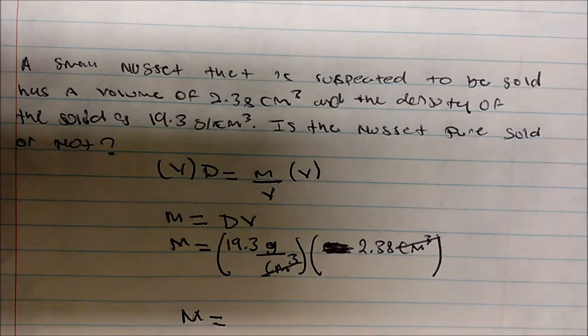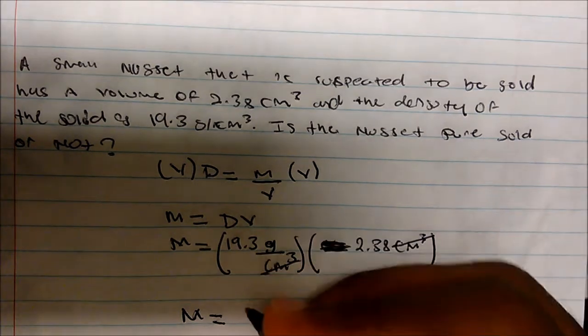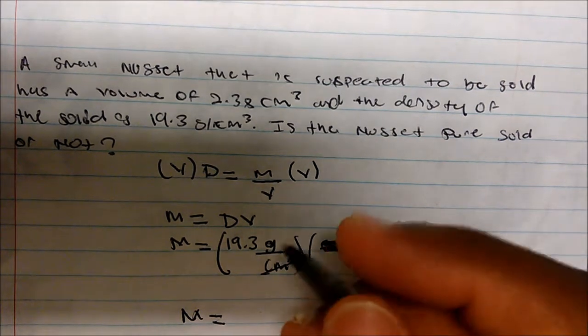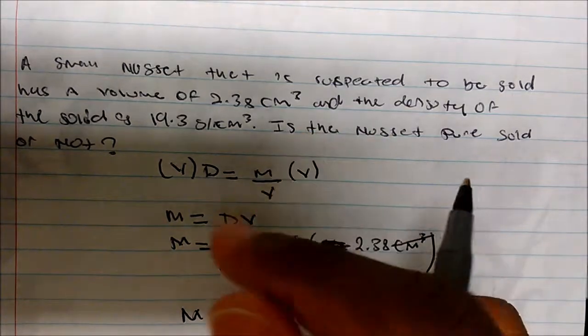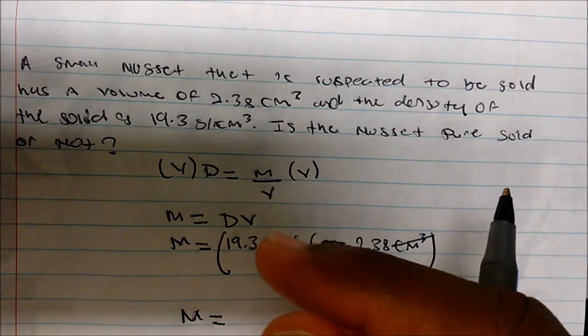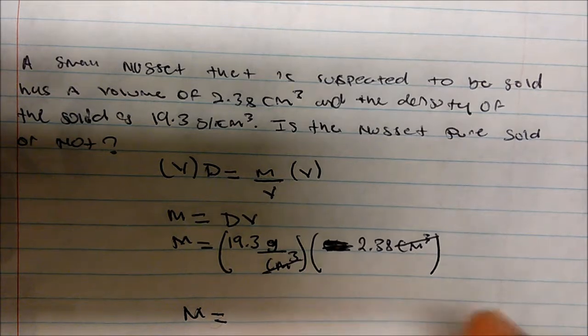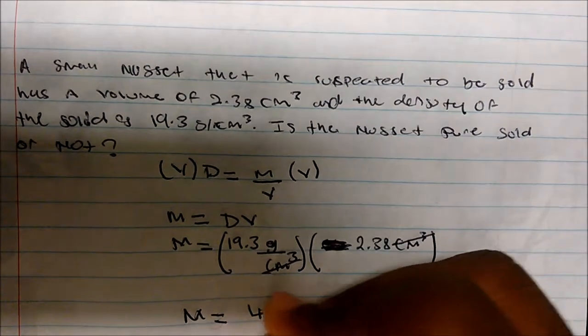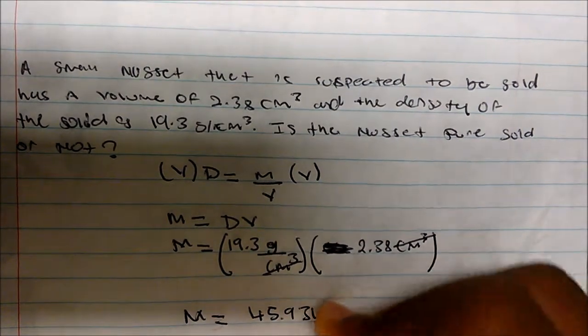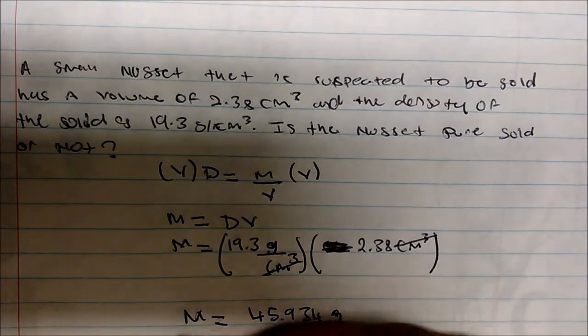Okay? And so if I multiply, take out my calculator, multiply 19.3 times 2.38, and multiply by 19.3 times 2.38, then I'll get 45.934 grams.